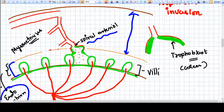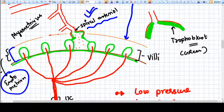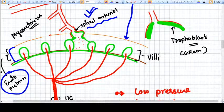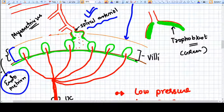The spiral arterioles are many in number and they are the vessels that supply the endometrium, placenta, and fetus. So spiral arterioles are very important vessels of the body. Now, these spiral arterioles open into the intervillus space.